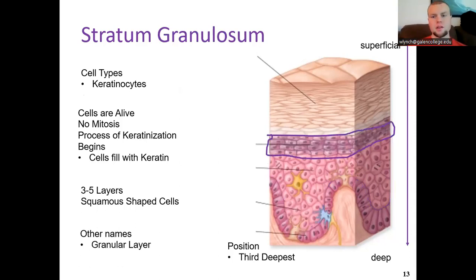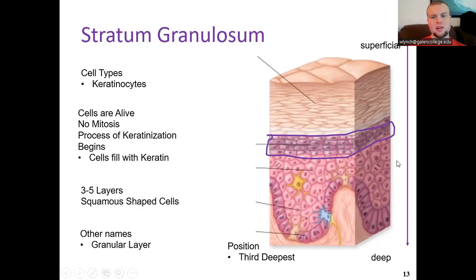The stratum granulosum is an area of granulated cells — a middle layer. At this point, keratin has begun to take over the cell, choking it and preparing it to die. The cells are still technically alive but undergoing keratinization, becoming essentially a glob of keratin protein. They are not dividing and are simply filled with granules of protein. They are squamous-shaped — flattened squamous epithelial cells. Another name is the granular layer.